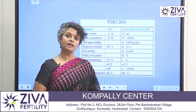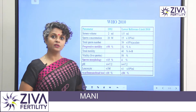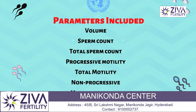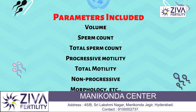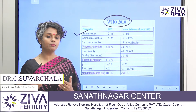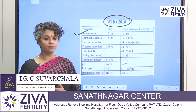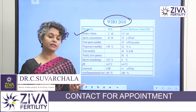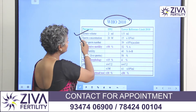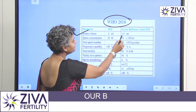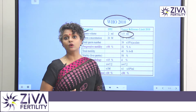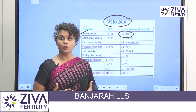When we come to the semen analysis report, the parameters that are included are the semen volume — and we're going to look at the 2010 WHO parameters that have been set for all fertility centers, and we follow these parameters only. The semen volume should be at least 1.5 ml. Anything lower than that is called an abnormal sample.